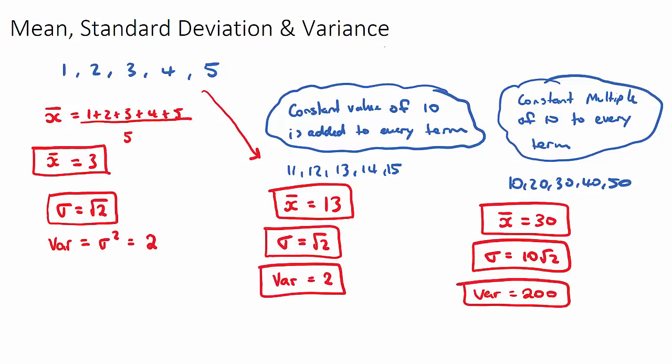So this is a good example. This is a very common question in IB math exams. And what we need to take out of this is if we have an original data set and a constant is added to every term, the mean will add by that constant, but the spread of the data, which is our standard deviation and variance, that won't change. But if there's a multiple, the mean does change by the multiple and the standard deviation does.